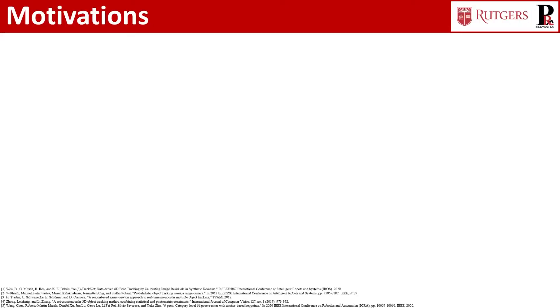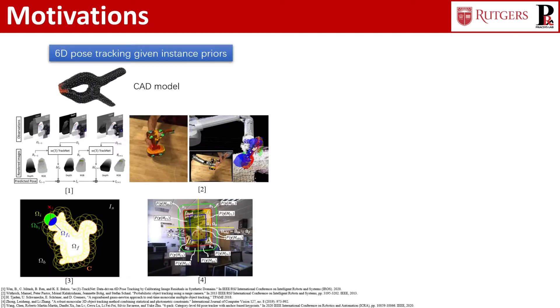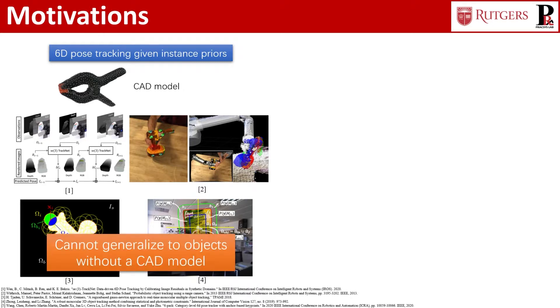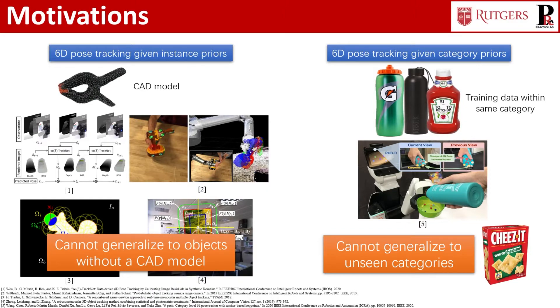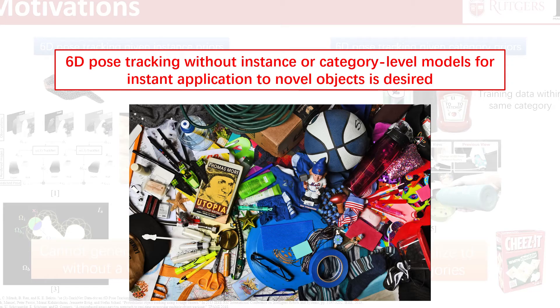Previous work have approached the 6D pose tracking problem with different levels of assumptions. For those methods that rely on instance-level CAD models, they cannot generalize to novel or new objects without a CAD model. Other methods relax this assumption to category-level 3D models for training, whereas they cannot generalize to objects from unseen categories. Therefore, 6D pose tracking without instance or category-level models for instant application to novel objects is desired.